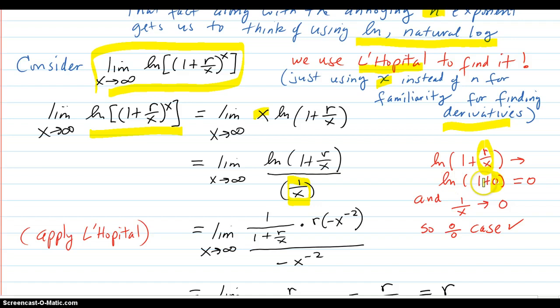So that numerator is going to 0. Denominator, 1 over X, as X goes to infinity, this is going to 0. So we do have the 0 over 0 case checked off.